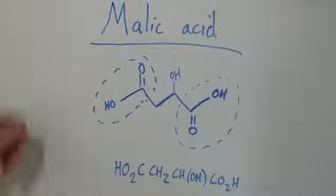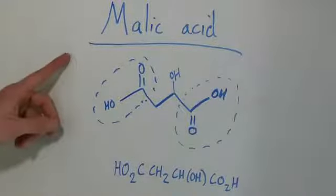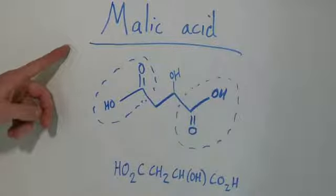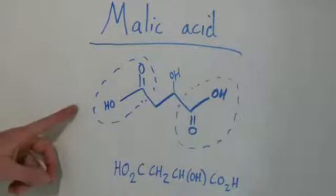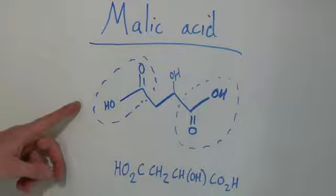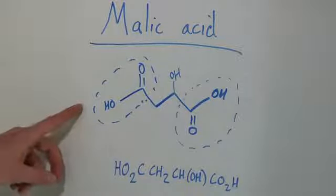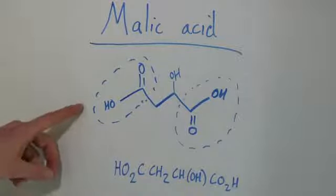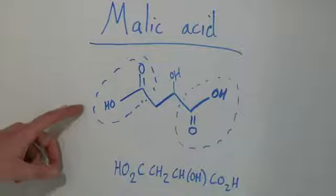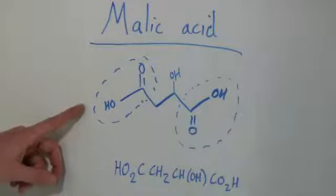We're going to look at the chemical composition here briefly and then we're going to talk about a couple of examples of where it is found. Malic acid is an organic molecule — a bio-organic molecule you might say. Its main characteristic is that it has two carboxyl groups.